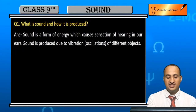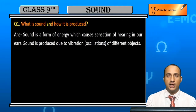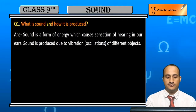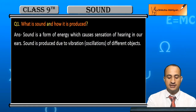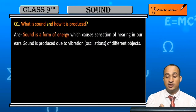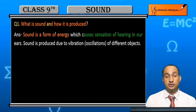What is sound and how is it produced? Sound kya hai aur isay kaise produce karte hain? The answer is: sound is a form of energy which causes sensation of hearing.